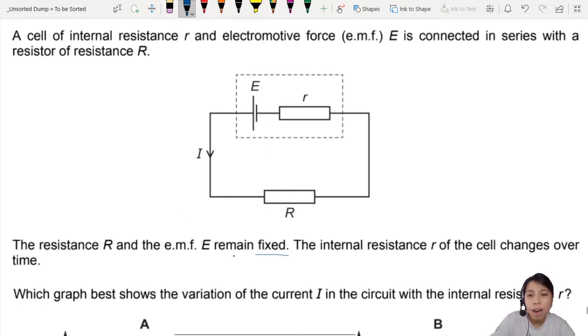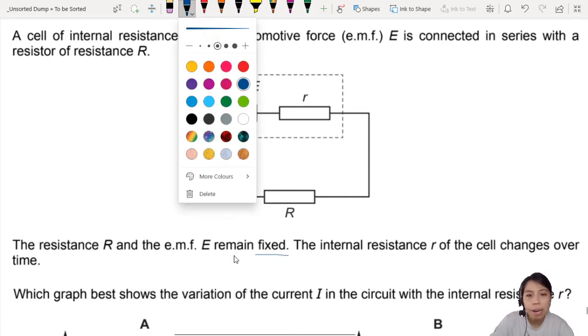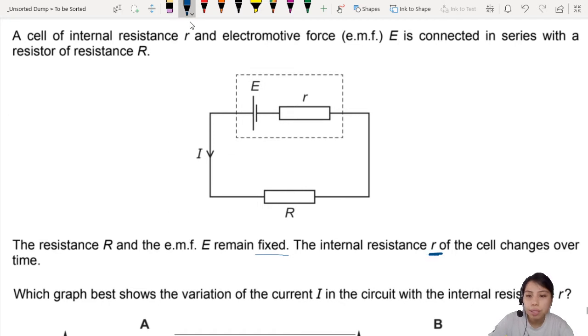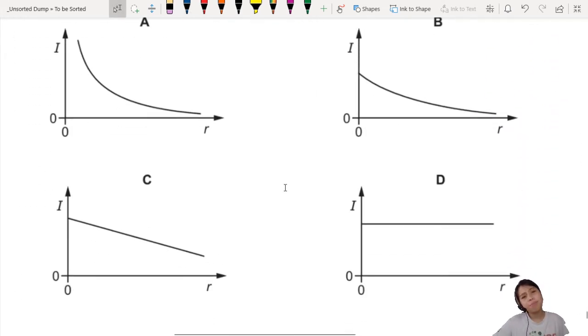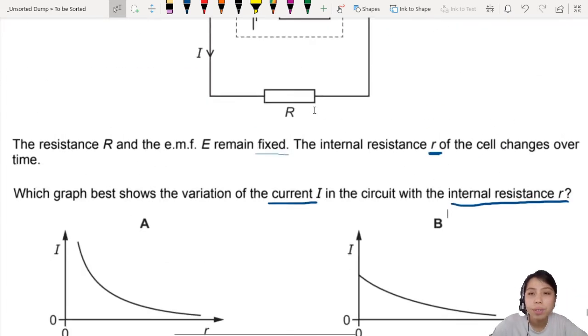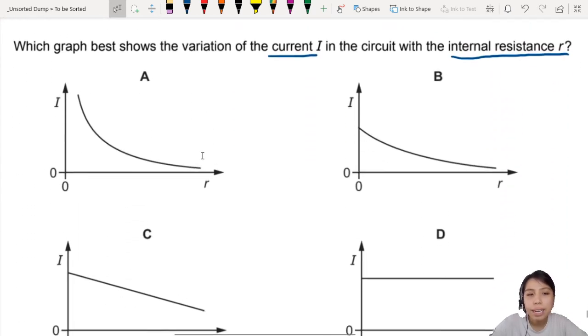The internal resistance r changes over time. So this thing is changing. Which graph best shows the variation of current with the internal resistance? Whenever there's a graph question and you're not sure where to start, why not start with some equations? Or actually, let's choose two points first. The starting and the end.